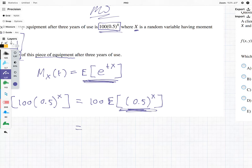So what we're going to be doing here in this next step is we're going to say 100 times the expected value, and then we're going to have here e to the x times ln 0.5.